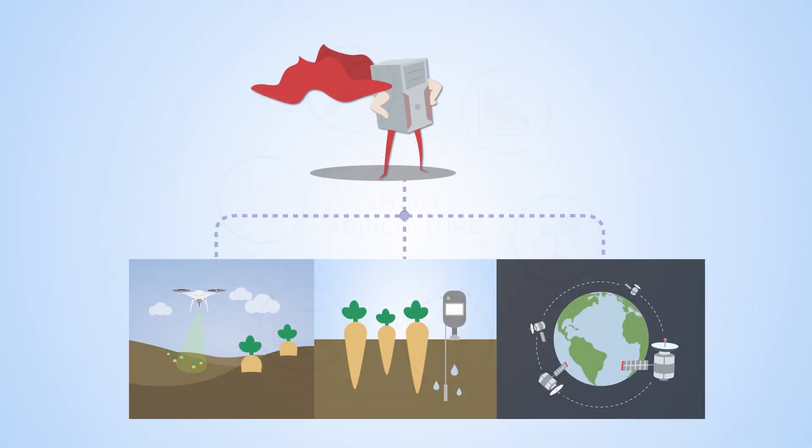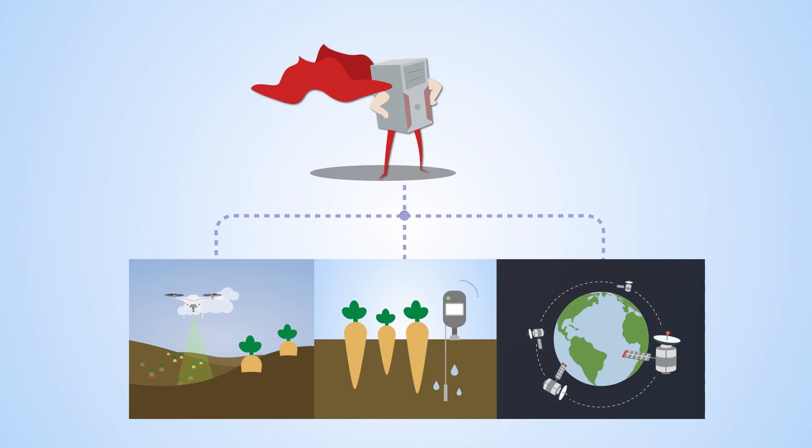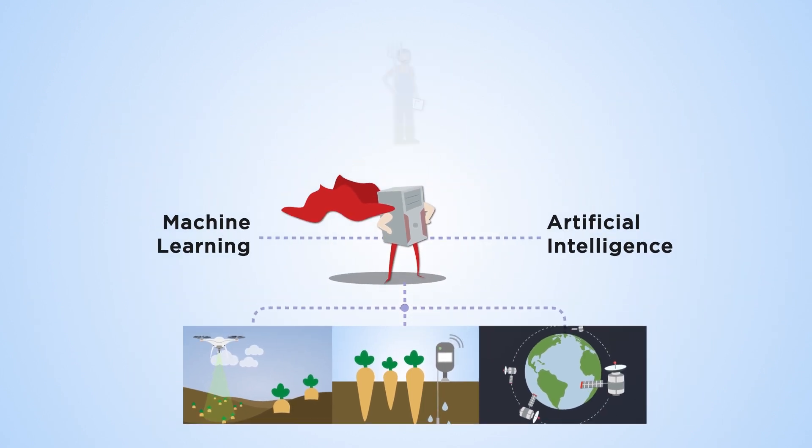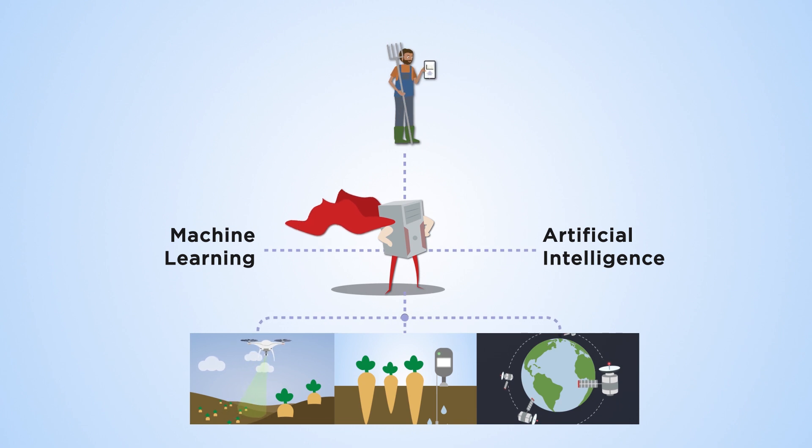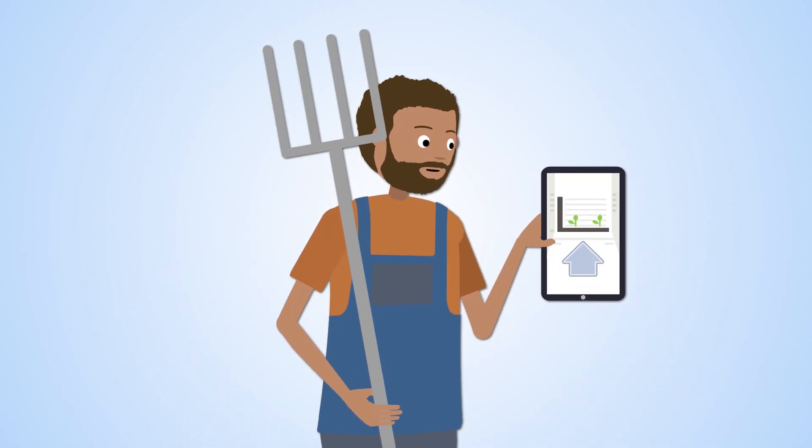The supercomputer also executes the mining of important information through the use of machine learning and artificial intelligence to create applications which can then be delivered through a number of channels, the most amenable being direct to smartphones of the farmers.